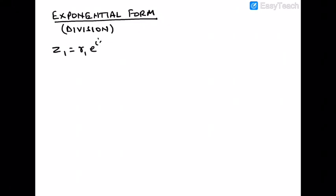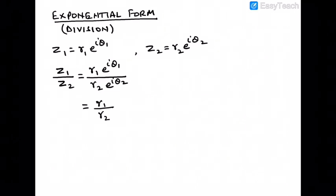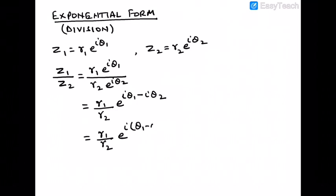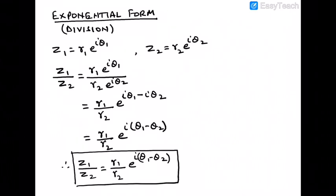Now let us do division. Again let z₁ = r₁·e^(iθ₁) and z₂ = r₂·e^(iθ₂). Then z₁/z₂ = (r₁·e^(iθ₁)) / (r₂·e^(iθ₂)) = (r₁/r₂)·e^(i(θ₁ − θ₂)). Therefore z₁/z₂ = (r₁/r₂)·e^(i(θ₁ − θ₂)).